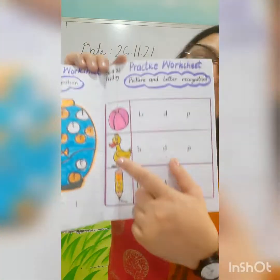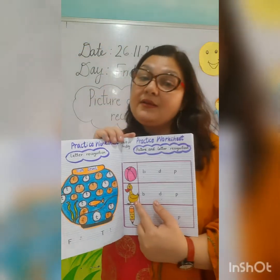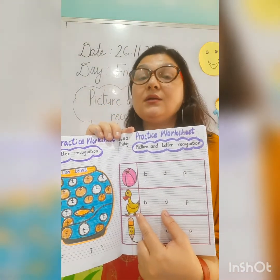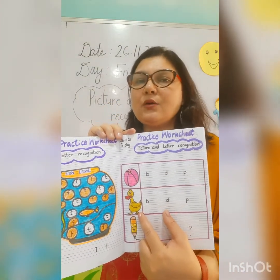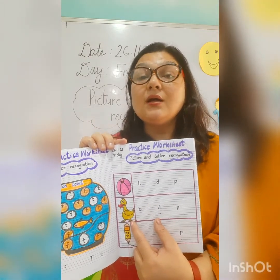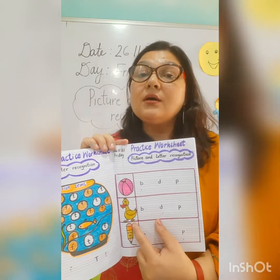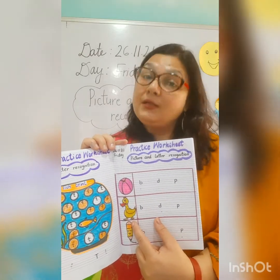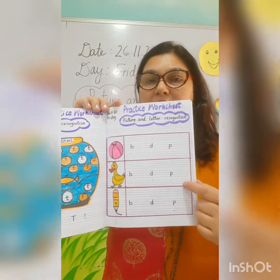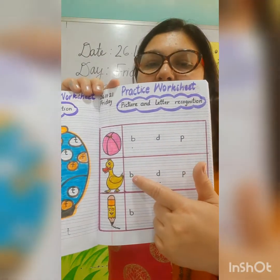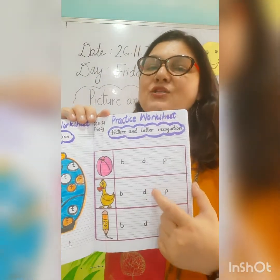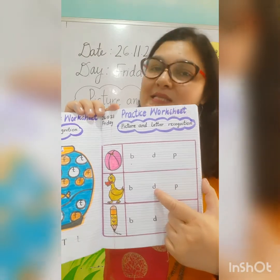Now let's see the next picture. What is this children? This is a duck. What is the initial sound children? Duck. And duck kis ka sound hota hai? Letter D ka. So yahaan humne small d dhoonna hai. Let's find it. This is small d — no. This is small d — yes. So you have to circle this letter.